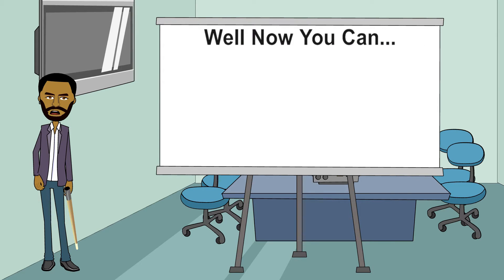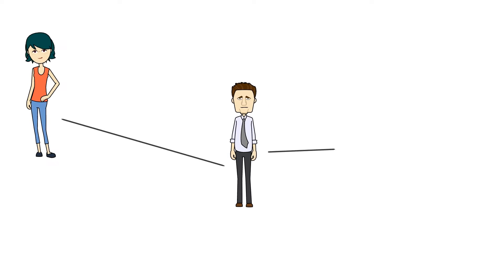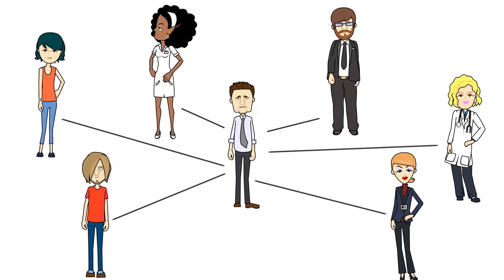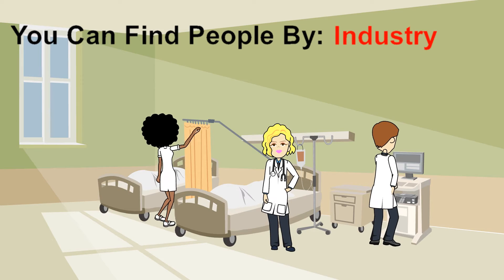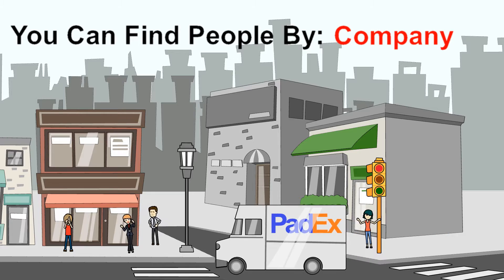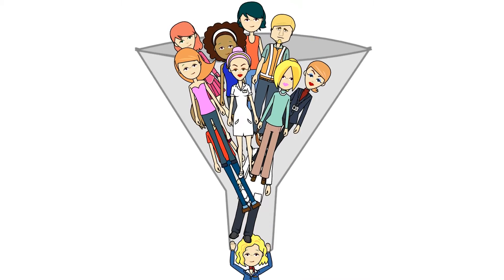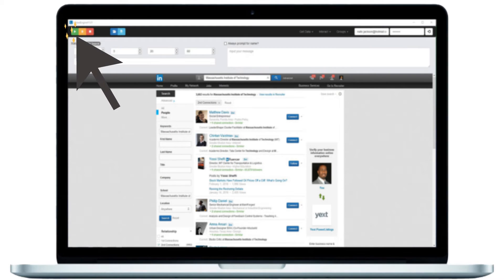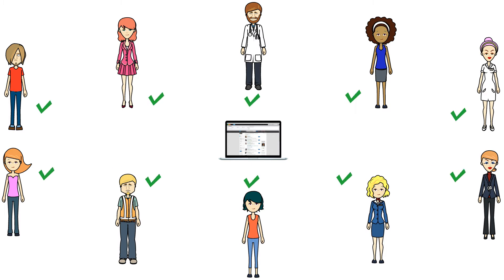Well, now you can, thanks to LinkedIn. LinkedIn helps you grow your network with its laser-targeted search capabilities. You can find people by location, occupation, industry, company, university, and more, and even filter down to the tiniest detail. Once you get the results of your search, just push the green start button and LinkedIn will send each person a connection request for you.